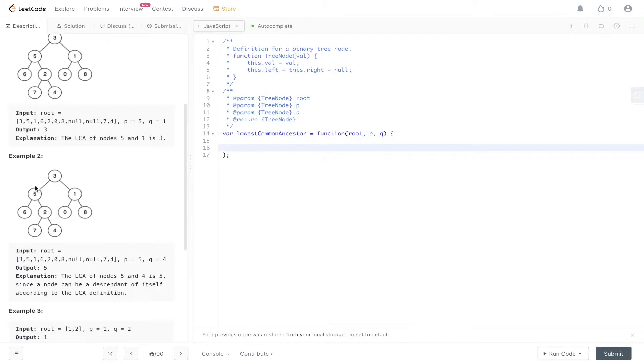Second example: we have 5 and 4 as P and Q. The lowest common ancestor is the first parent of both 5 and 4, which is 3. So let's discuss the solution for this.